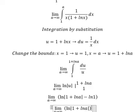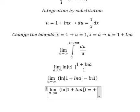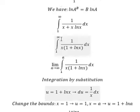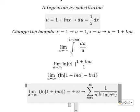So we see that when a approaches positive infinity, this one will go to positive infinity, so everything will go to positive infinity. Therefore we can say that this one should be divergent.